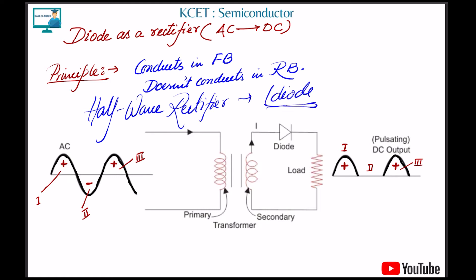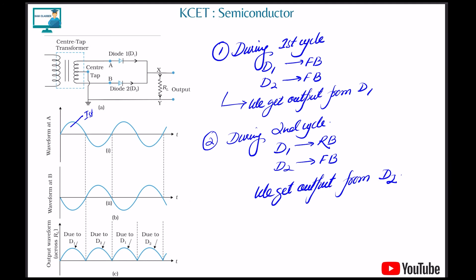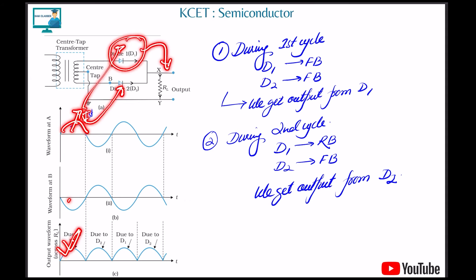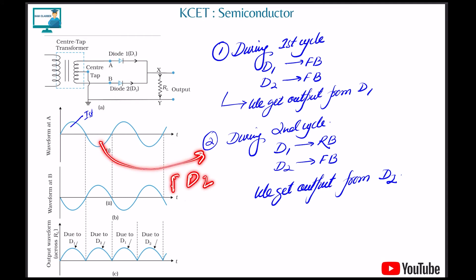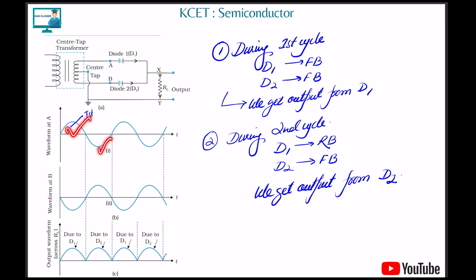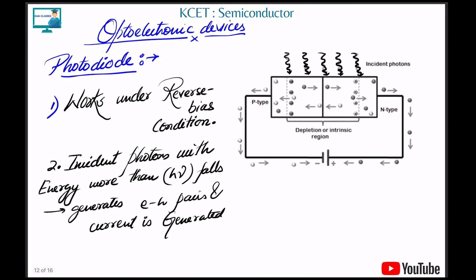In a full-wave rectifier we use two diodes, D1 and D2. During the first half-cycle, D1 is forward biased and D2 is reverse biased, so D1 conducts. During the second half-cycle, D2 is forward biased and D1 is reverse biased, so D2 conducts. In every cycle — positive or negative — either D1 or D2 sends current, so we get output for both halves. Same concept: forward biased conducts, reverse biased doesn't.